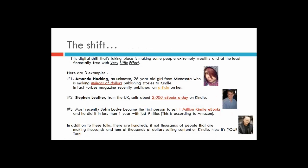Amanda Hocking, along with some other people, have just become insanely rich. She was a 26-year-old regular girl from Minnesota who liked to write — not an English literature major or journalism major. Because of Kindle, she was able to publish her own short stories, and she's made absolutely millions. You can look her up online. The stories were about 17 to 20 pages long — we're not talking Lord of the Rings epics, just short stories.